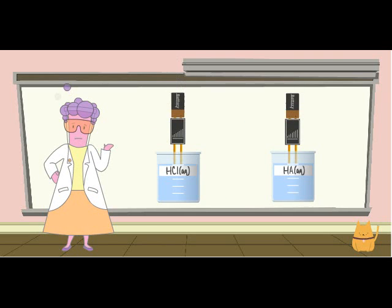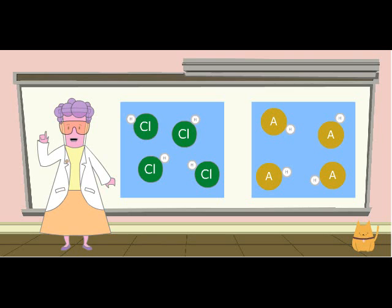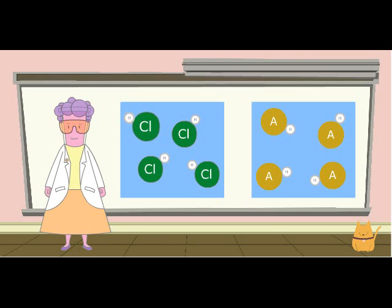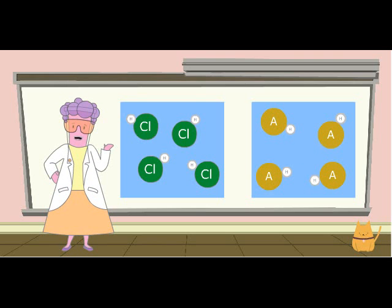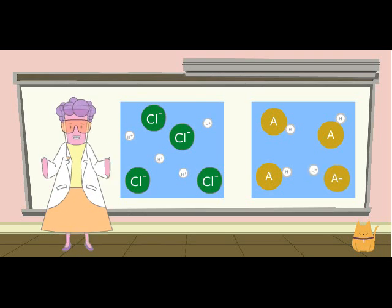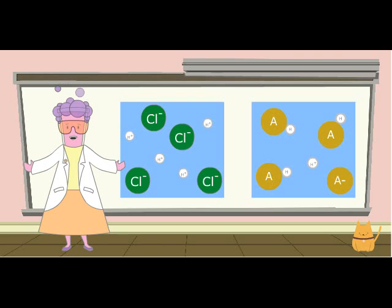Now, how do we account for the poor conductance of acetic acid? Both have four molecules of acid dissolved in water. All four HCl molecules break into ions, while only one of the acetic acid molecules breaks into ions.